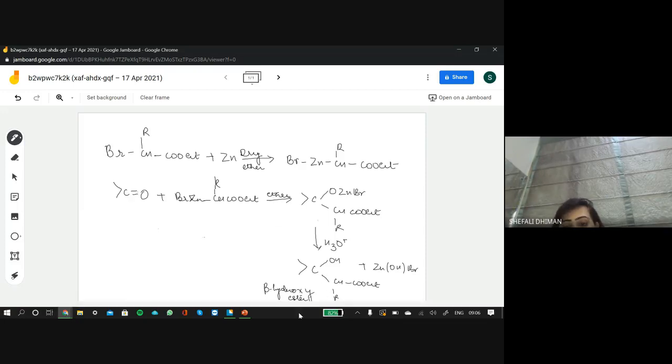...you form an intermediate which undergoes hydrolysis to form the beta-hydroxy ester. What is important is, you have to just learn this reactant. If you are able to learn this reactant, automatically you will be able to write both the steps.